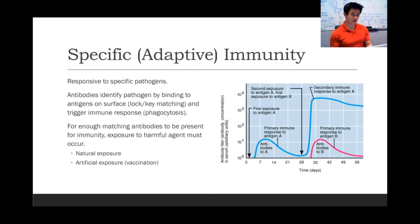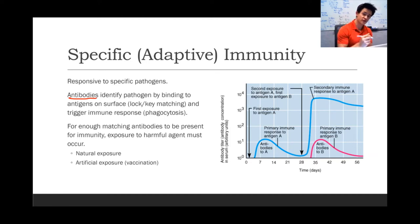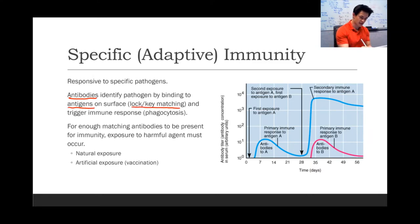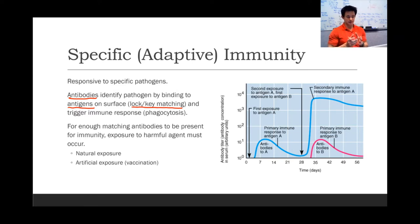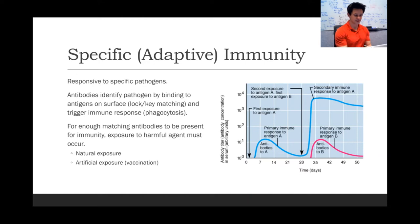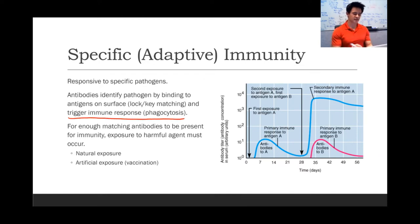Specific or adaptive immunity is responsive to specific pathogens, but it requires a targeting system called antibodies. Antibodies bind to surface features on a pathogen called antigens through a lock-key matching mechanism — an antibody must have matching features to bind specifically to that antigen. Once antibodies adhere to the antigen, in this case a virus, they trigger an immune response like phagocytosis, such as white blood cells consuming the virus.